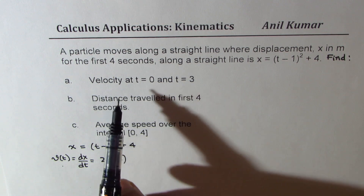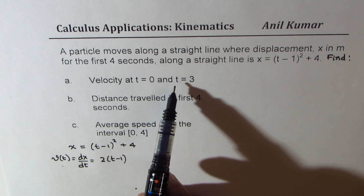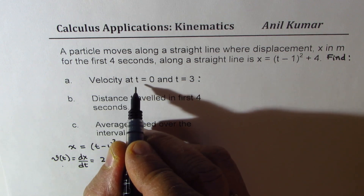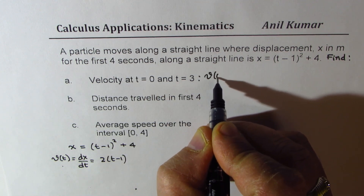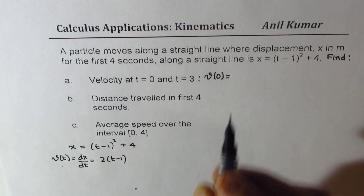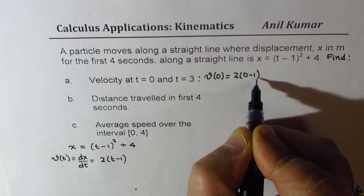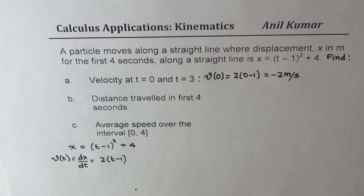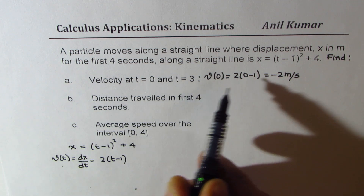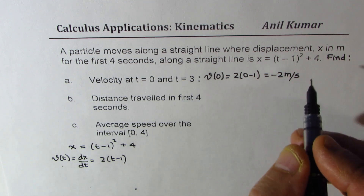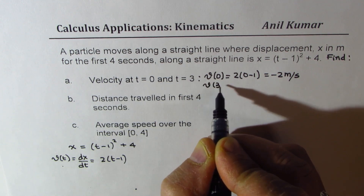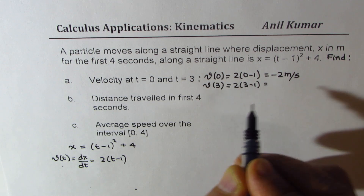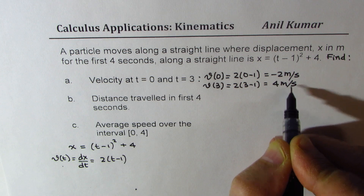From here we can calculate velocity at t equals 0 and also at t equals 3. Substituting 0 into the expression 2 times t minus 1, we get 2 times 0 minus 1, which gives us minus 2 meters per second. Substituting 3, we get 2 times 3 minus 1, which is 2 times 2, giving 4 meters per second.